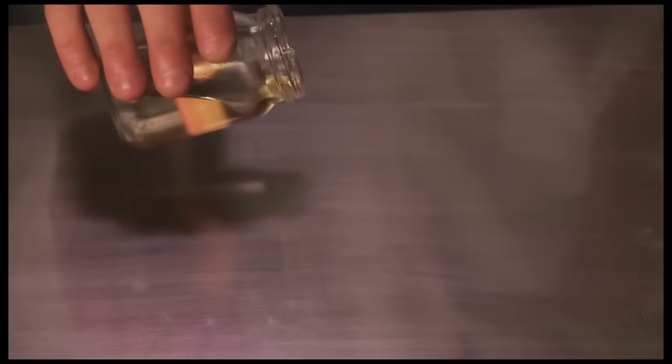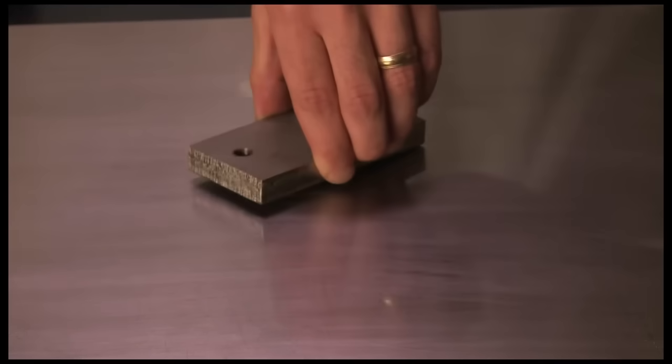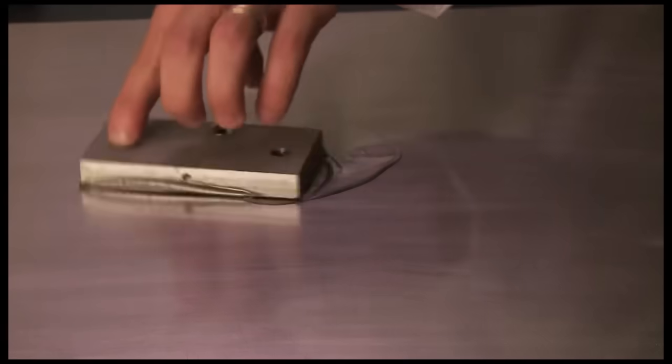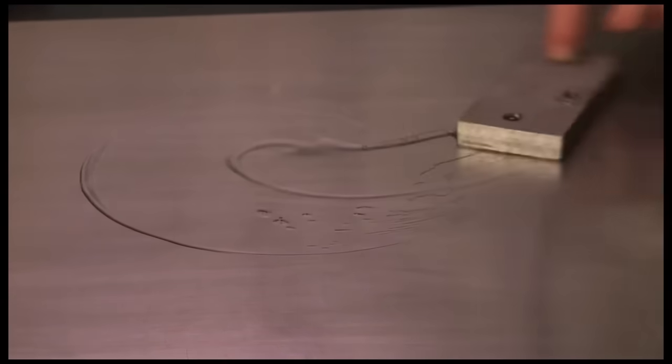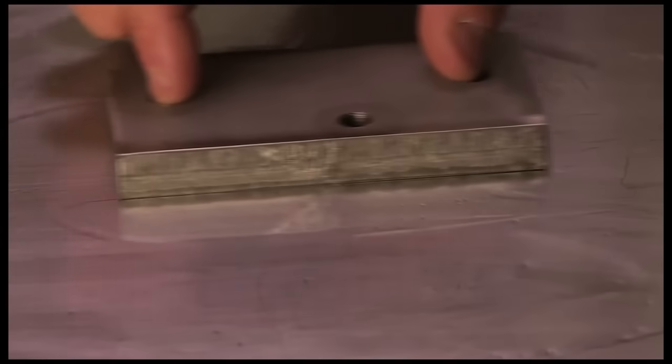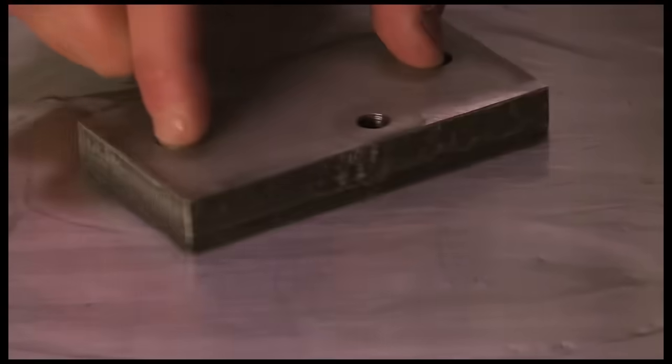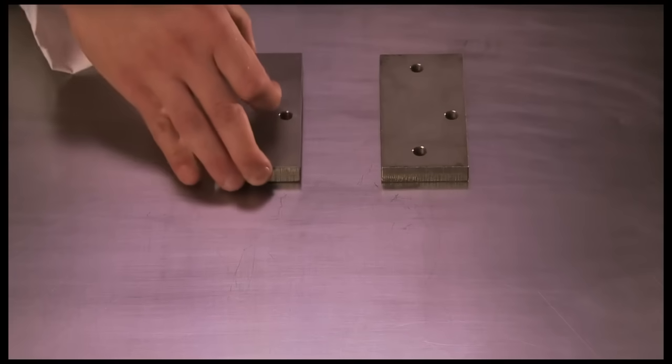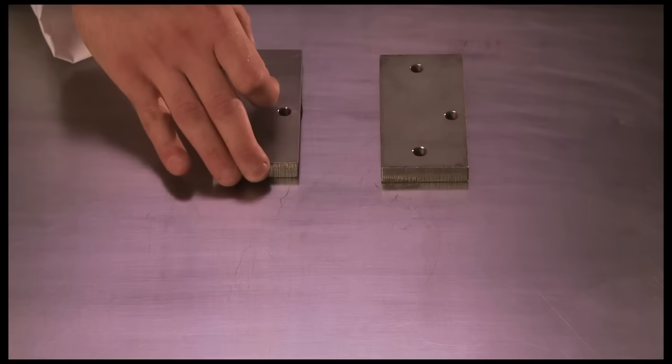When oil is added between the two pieces of metal, you can see that less force is needed to move the block and there is less resistance. The oil has created a barrier between the wear points of the metal, reducing the friction. Very little wear is occurring and very little heat is being generated. It also requires less force or amperage draw to move.